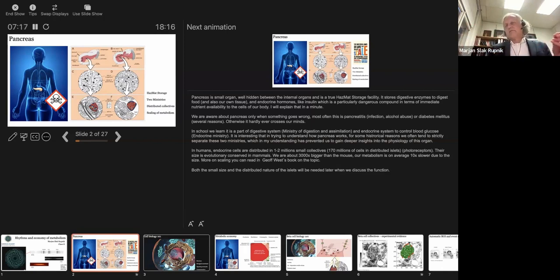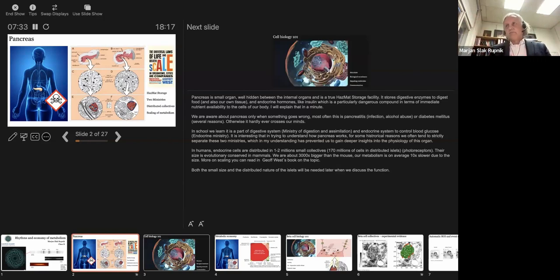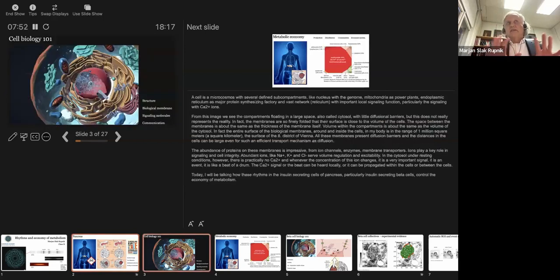In school, when we talk about pancreas and diabetes, we typically hear that it's composed of two parts. One part is part of the digestive system. I would call it like a ministry of digestion and assimilation. And the other part would be endocrine part, which basically controls nutrients in blood, particularly glucose. It is interesting that historically, we deal with exocrine part of pancreas separately. So we have separate clinics for that. There is a special physiology, and we have endocrine physiology. There is very little overlap between those two ministries.